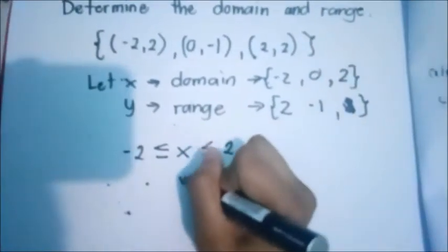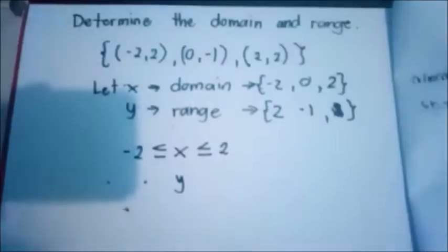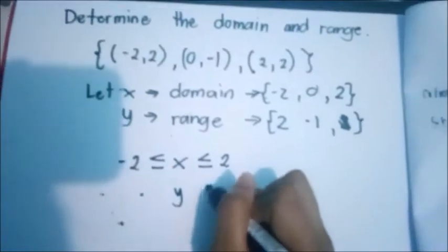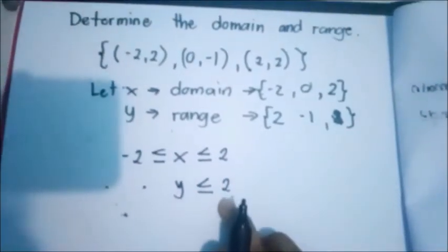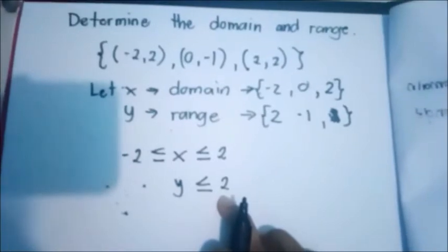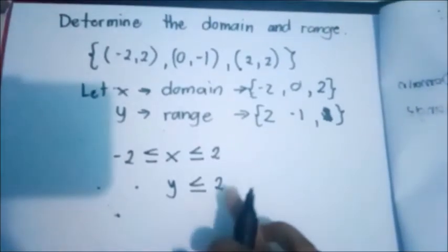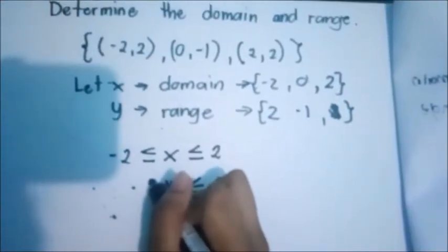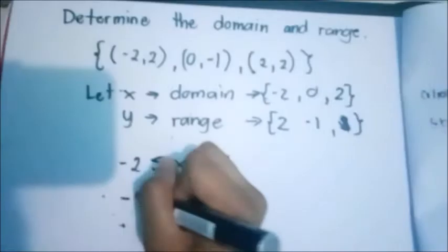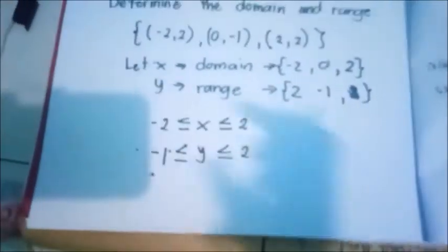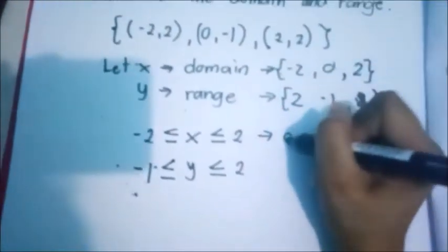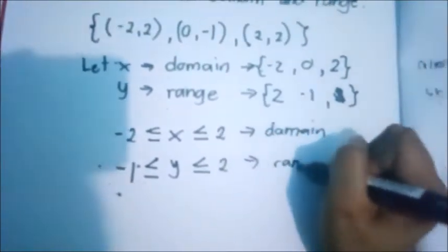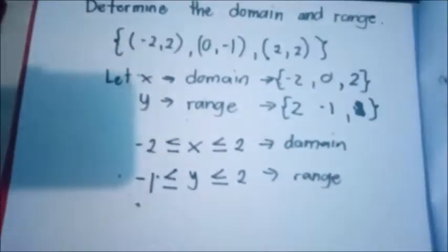How about the range? We have Y. We have 2, so this will be the maximum value of Y. And the minimum is negative 1. So this will be the domain and the range of the given example.